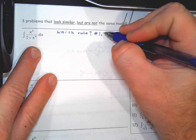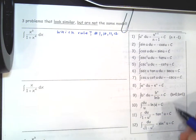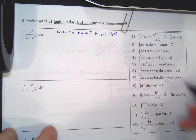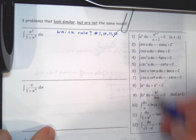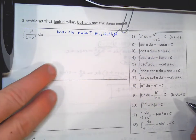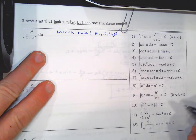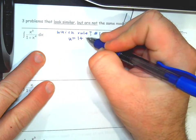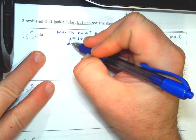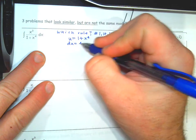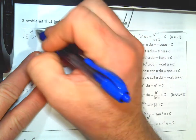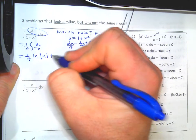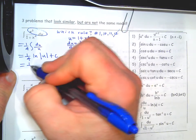On the back side I want to show you a bunch of problems that look similar to each other but end up using totally different rules. This is something you need to get good at — recognizing when a special rule applies. I've listed all the antiderivative rules on the side for convenience. Look at the list and decide which rules might work for each problem.